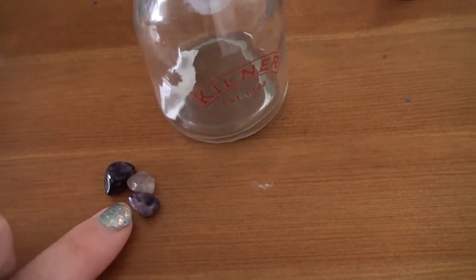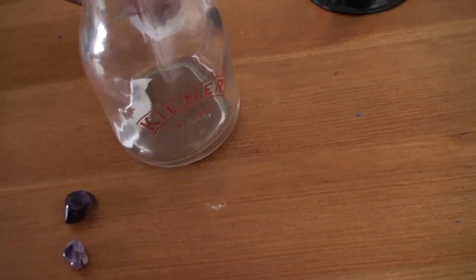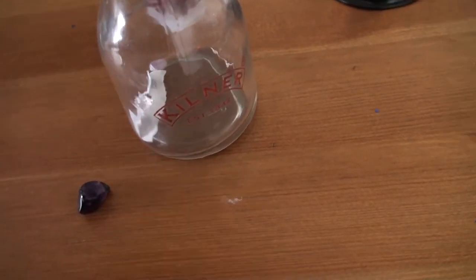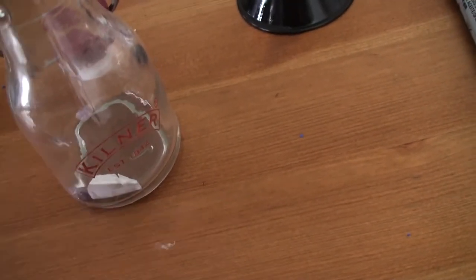And then I'm going to put three amethyst chips in. One dark, one light, one medium. So for maiden, for mother, and for crone.